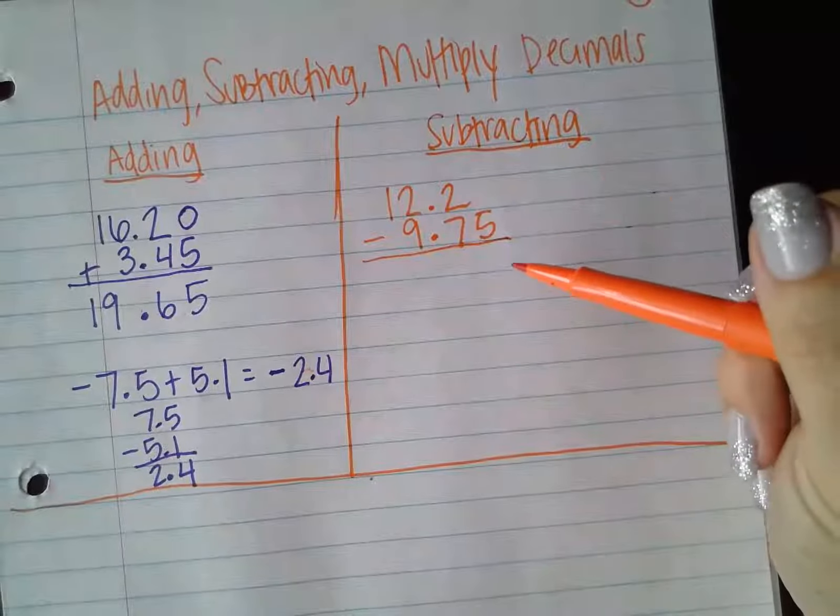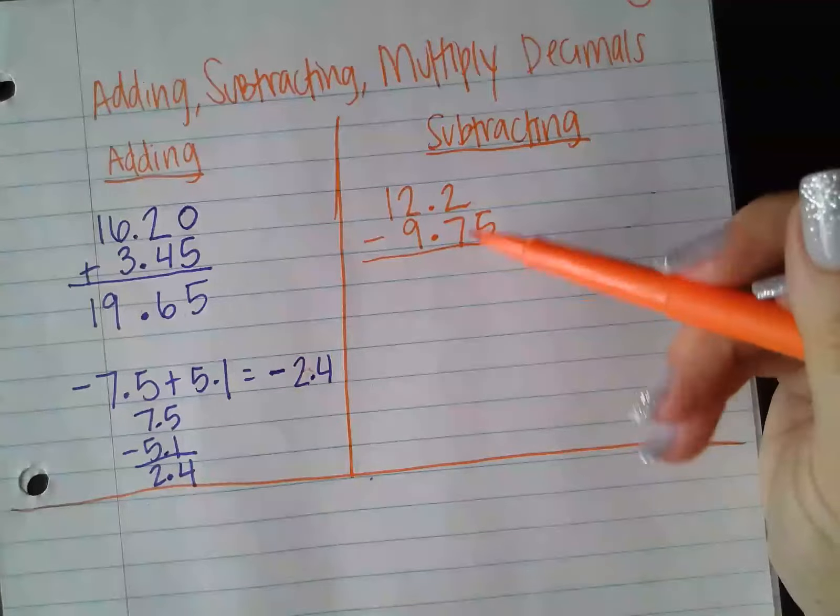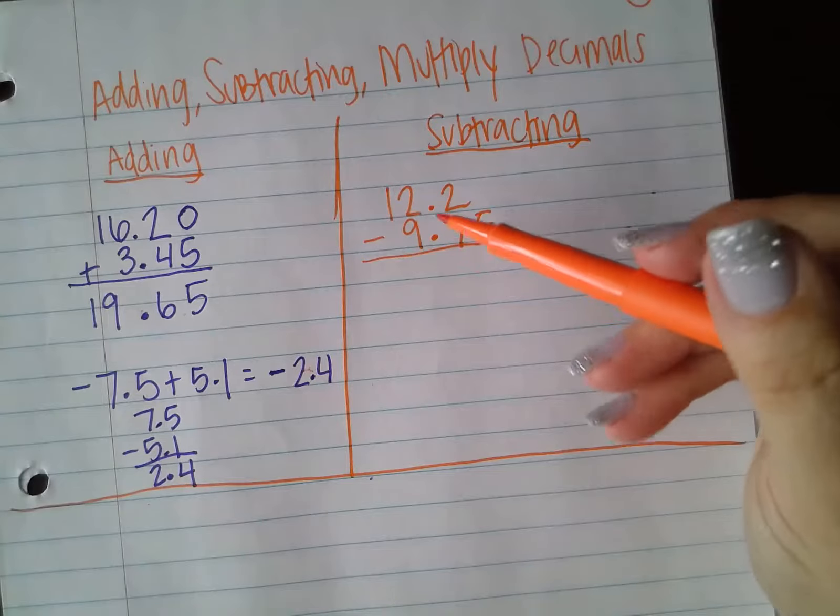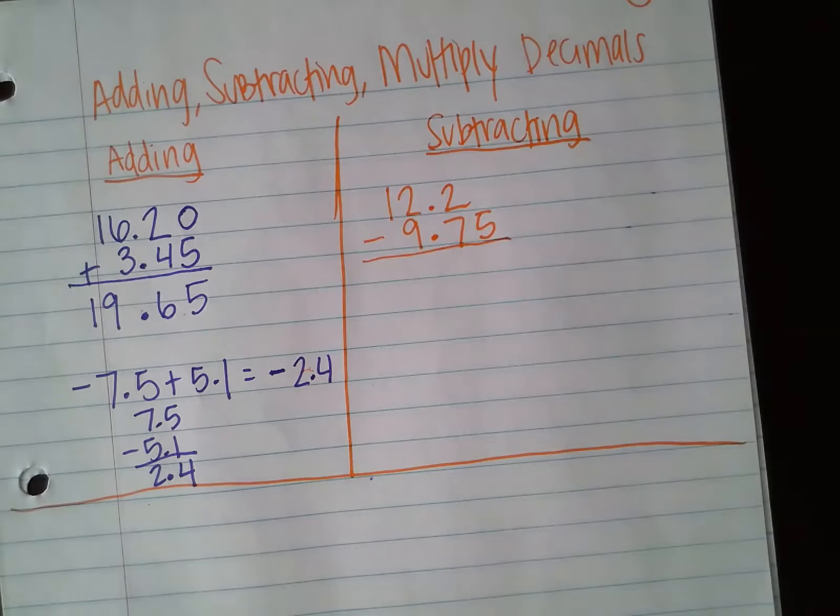So you'll notice again, I have lined up my place values. So my tens place are lined up, my decimal points are lined up, my ones place is lined up and so forth.